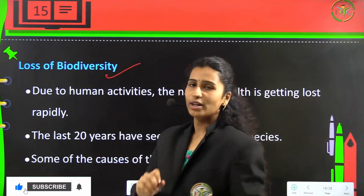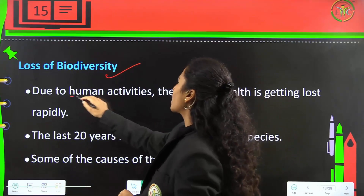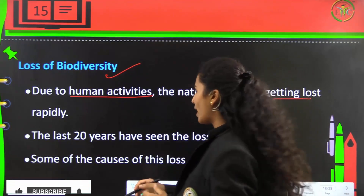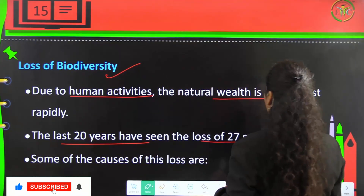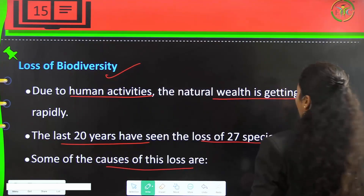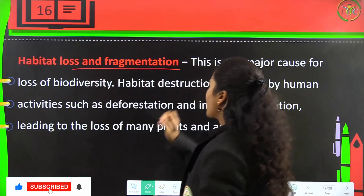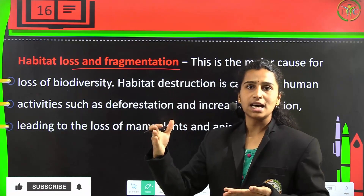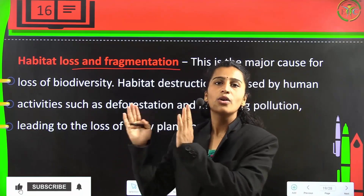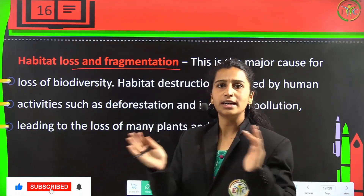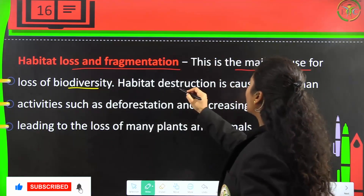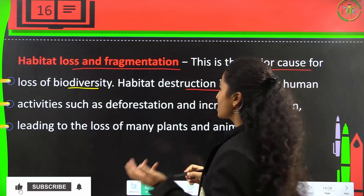The loss of biodiversity has been caused by human activities. Our natural wealth is getting lost very rapidly — the last 20 years have seen the loss of 27 species. Some of the causes of this loss are habitat loss and fragmentation. We have lost many species, and that is the reason why wild animals are entering cities and causing harm.